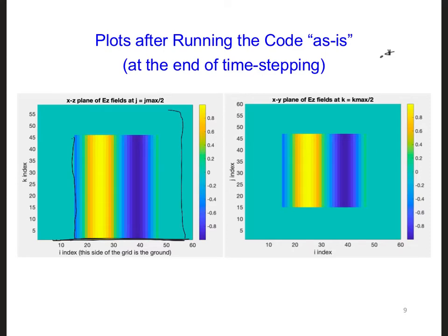But there's PML on the other sides. And this is then on the right, it's a plane through the center of the grid, and there's PML on all four sides. Now I didn't draw this PML to scale since the PML is 10 cells thick.